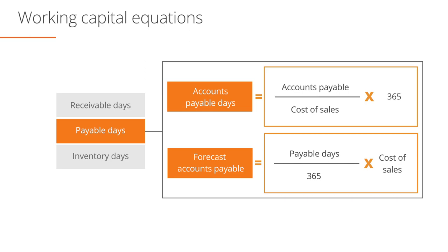After forecasting receivables, we can then forecast accounts payable. In a similar manner, the accounts payable days ratio can be used to link forecast payables to cost of sales. If cost of sales data is not available, revenues can be used. The first formula seen here defines the accounts payable days ratio. The second formula shows how we can use forecast cost of sales and payable days to forecast accounts payable.